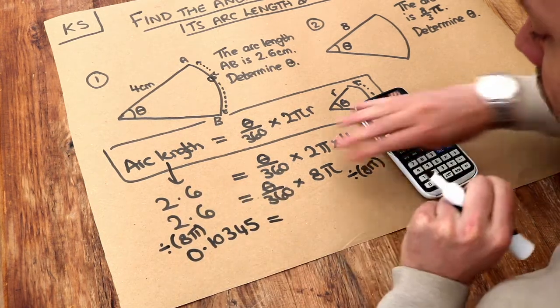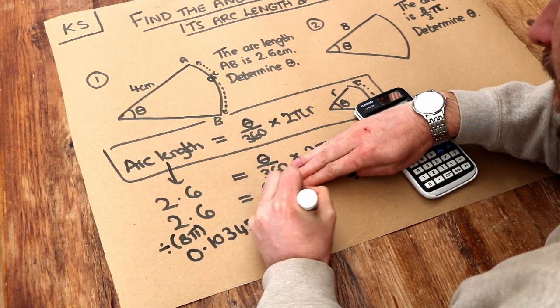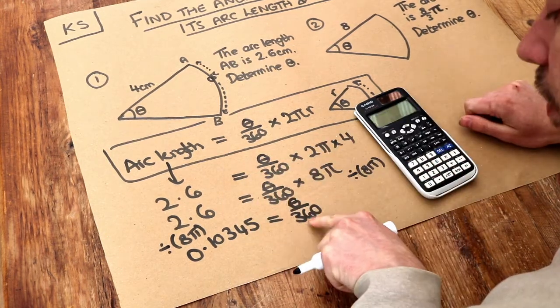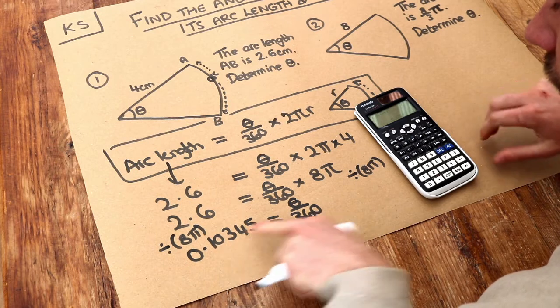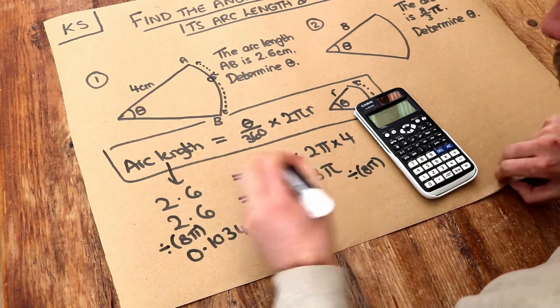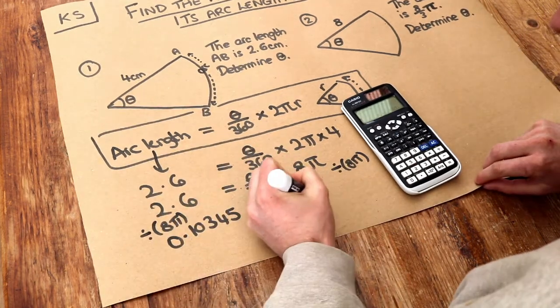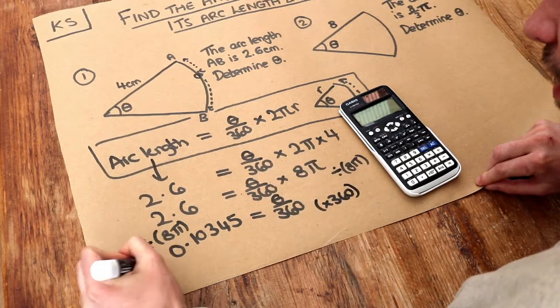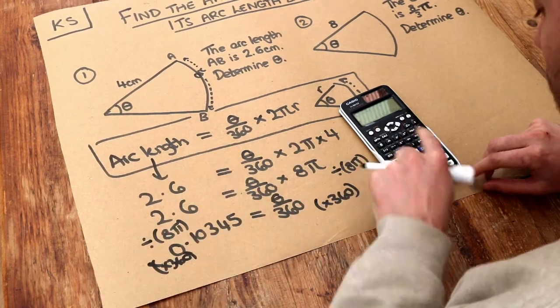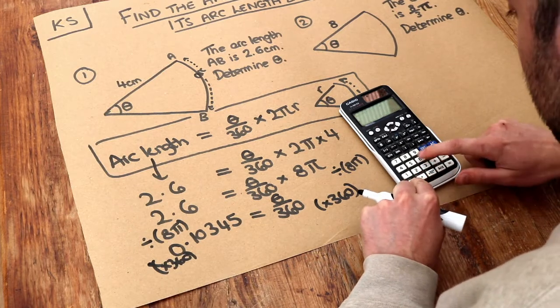Dividing this by 8π gets rid of the times by 8π. And then we've got θ, it's been divided by 360 to get that. How do you get rid of that over 360? We do the opposite of divide by 360, which is timesing by 360. So we do that to both sides of the equation. We can just do the answer key, times by 360.